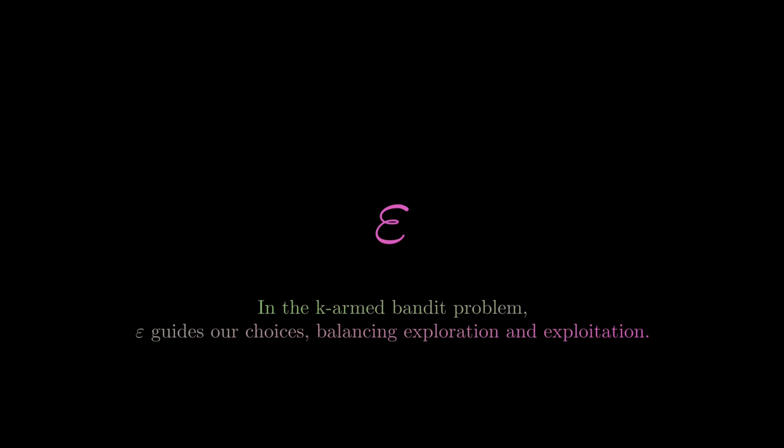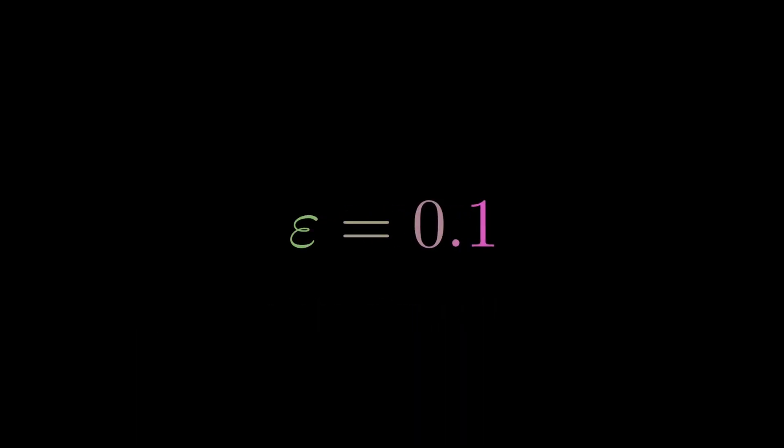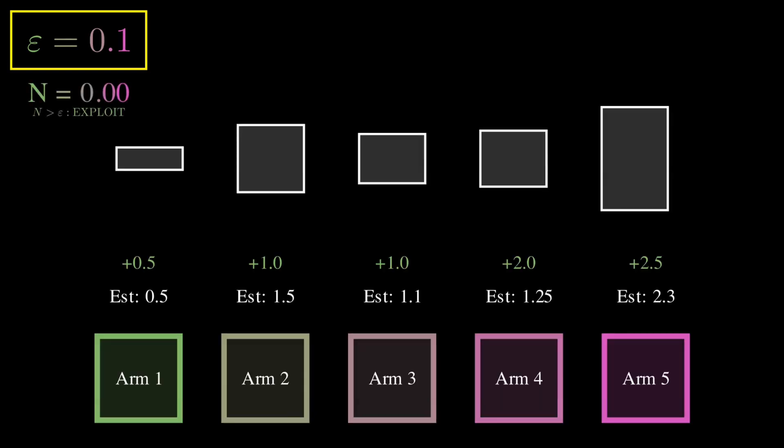In the key arm bandit problem, Epsilon guides our choices, balancing exploration and exploitation. Our approach uses a constant Epsilon value of 10%, which means that 10% of the time, we're going to choose to randomly pull an arm that is exploring the environment, and the other 90% of the time, we are going to choose the arm that has the highest expected reward. In our implementation, we just generate a random number between 0 and 1. Let's call it N. And if that number is higher than 0.1, our Epsilon, which is to exploit, meaning that we invest in the stock that has shown the best performance so far, and otherwise we explore by picking a stock at random.